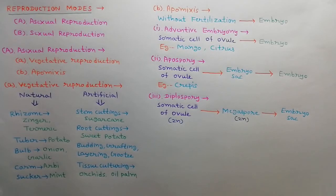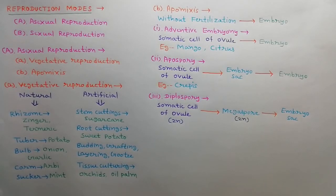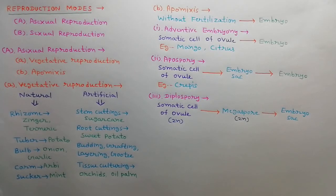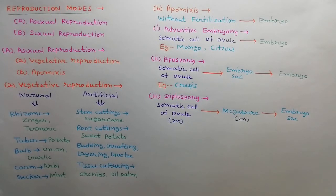The third type is diplospory. When the embryo sac is developed from a diploid megaspore without meiosis, it is called diplospory. The megaspore is diploid, hence each cell of the embryo sac is also diploid. Embryo formation occurs without fertilization.